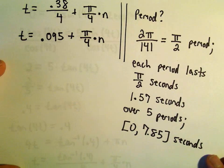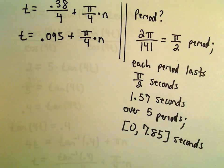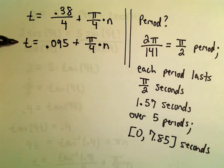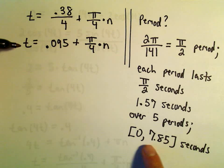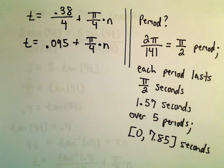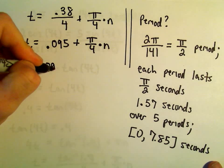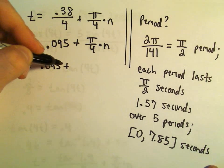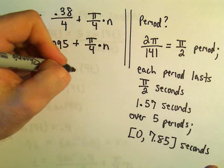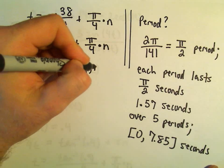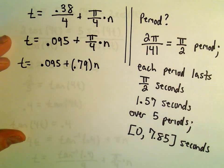So we have to find all t values, all solutions to this equation that fall in the interval 0 to 7.85. We've got our formula here. I'm going to figure out pi divided by 4, and we can approximate this. It says t equals 0.095 plus pi over 4, I'm getting that to be roughly 0.79 times n.